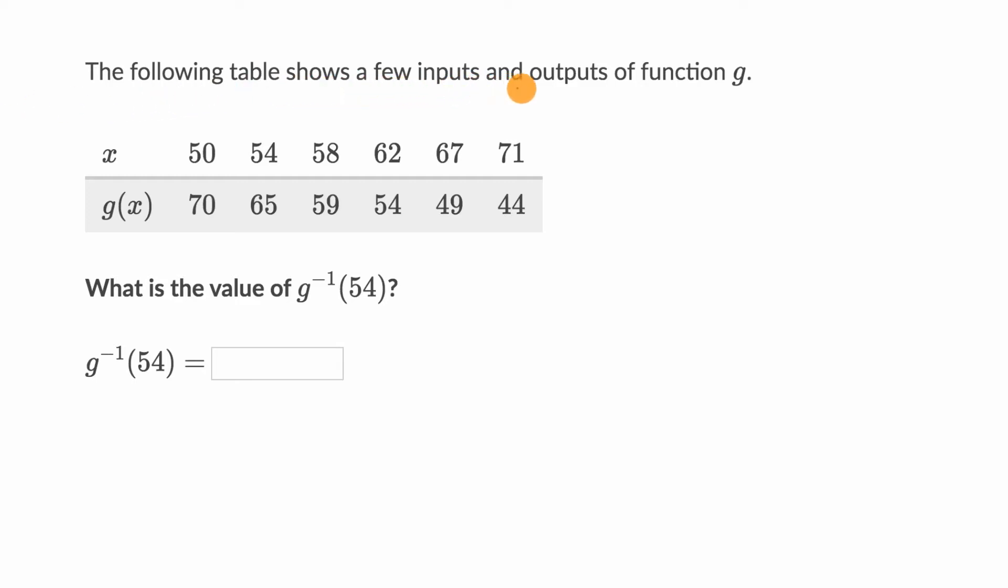We're told the following table shows a few inputs and outputs of function g. We have some possible inputs here for x and then the corresponding outputs here, g of x.